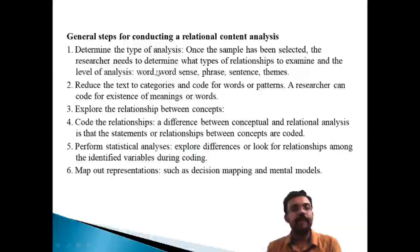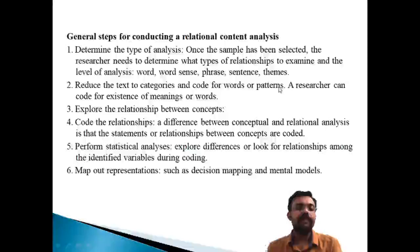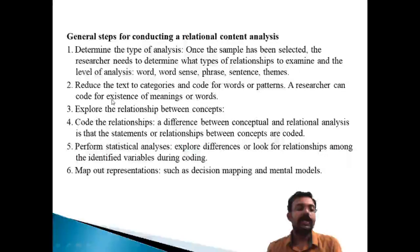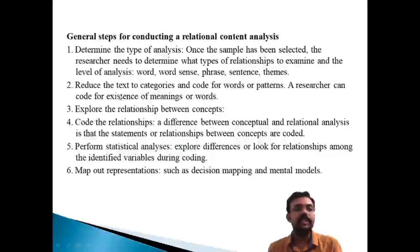After the sample has been selected, the second step is to reduce the text to categories and code for words and patterns. This is a coding system — for example, for age you might code 1, 2, 3, 4, and for education similarly 1, 2, 3, 4, and for gender male = 1 and female = 2. The third step is to explore the relationships, such as the relationship between age and education.